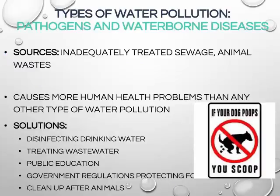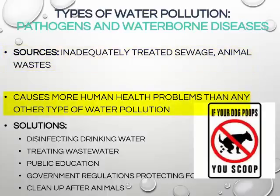Pathogens and waterborne diseases are caused by inadequately treated sewage and animal waste, and cause more human health problems than any other type of water pollution. Diseases include giardiasis, typhoid, hepatitis A, and dysentery. These can be prevented by disinfecting water, treating wastewater, public education regarding waste management, regulations that protect food, and cleaning up after domestic animals.